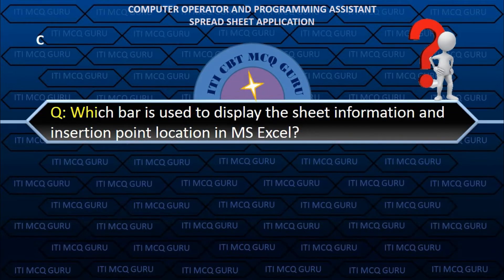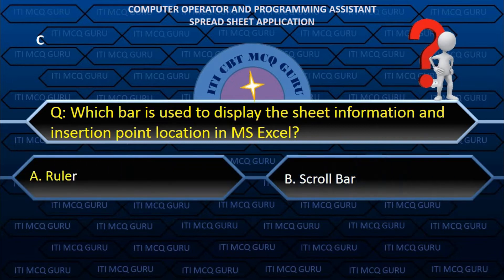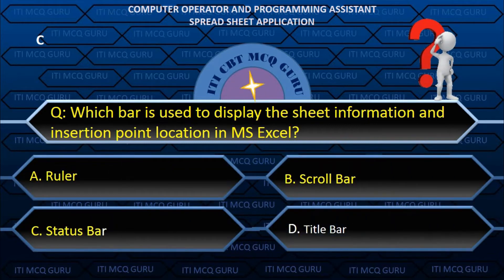Which bar is used to display the sheet information and insertion point location in MS Excel? C. Status bar.